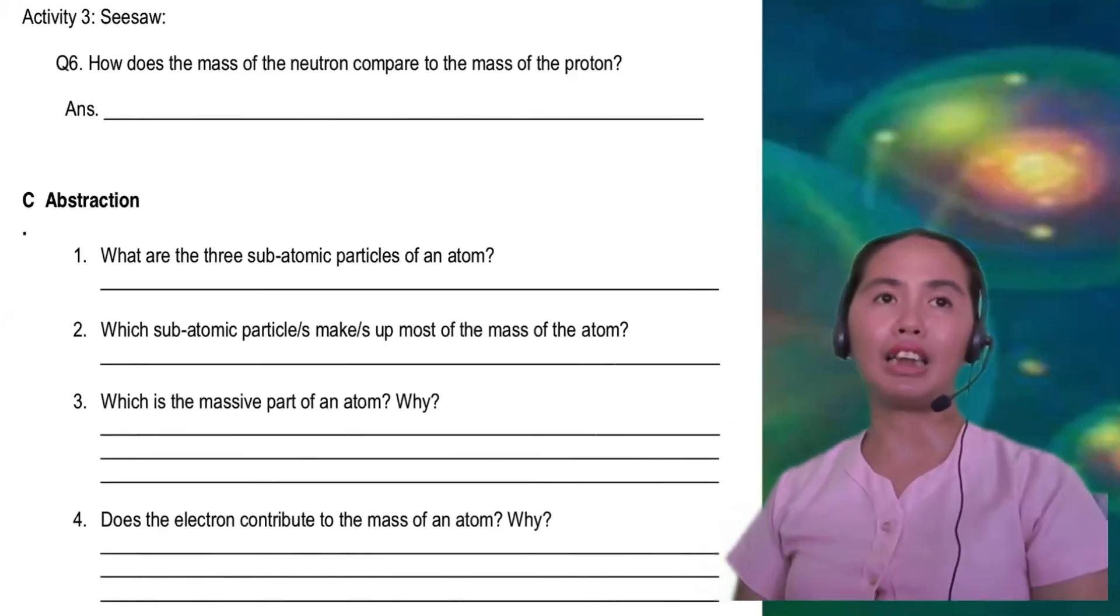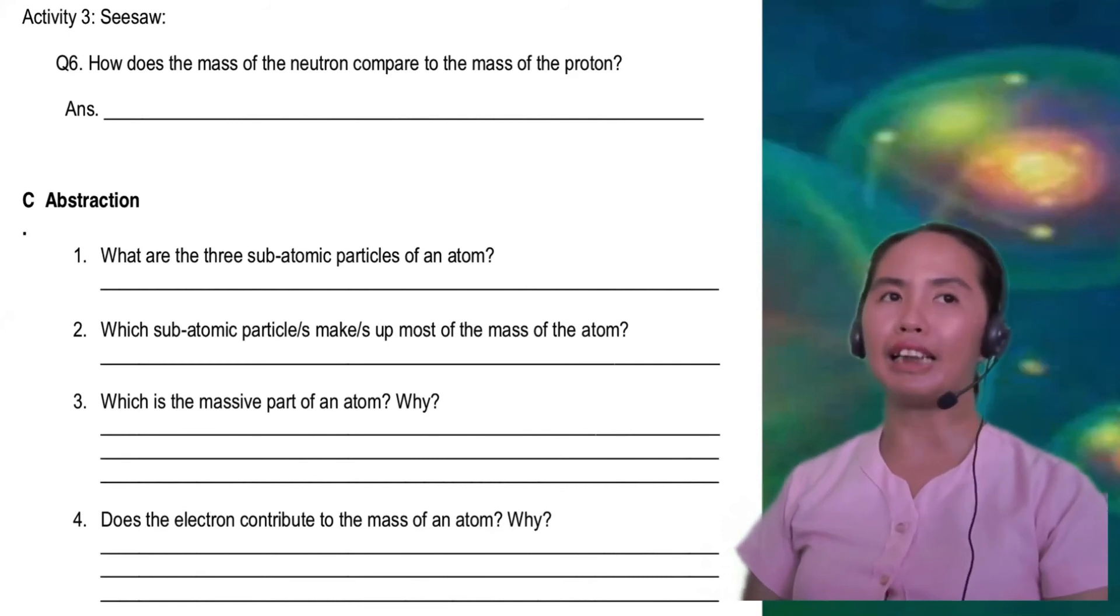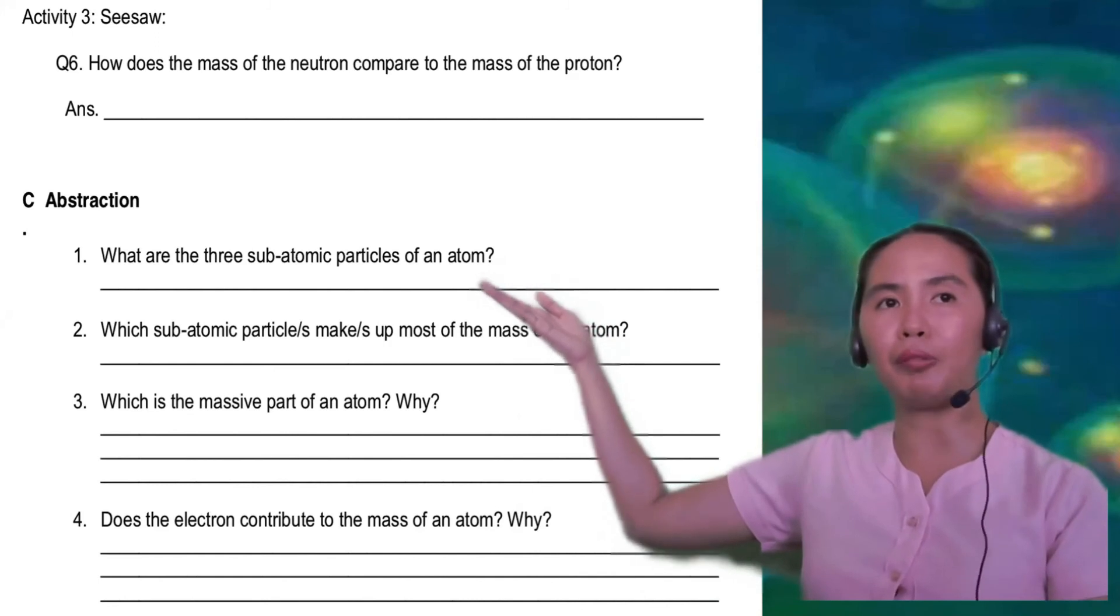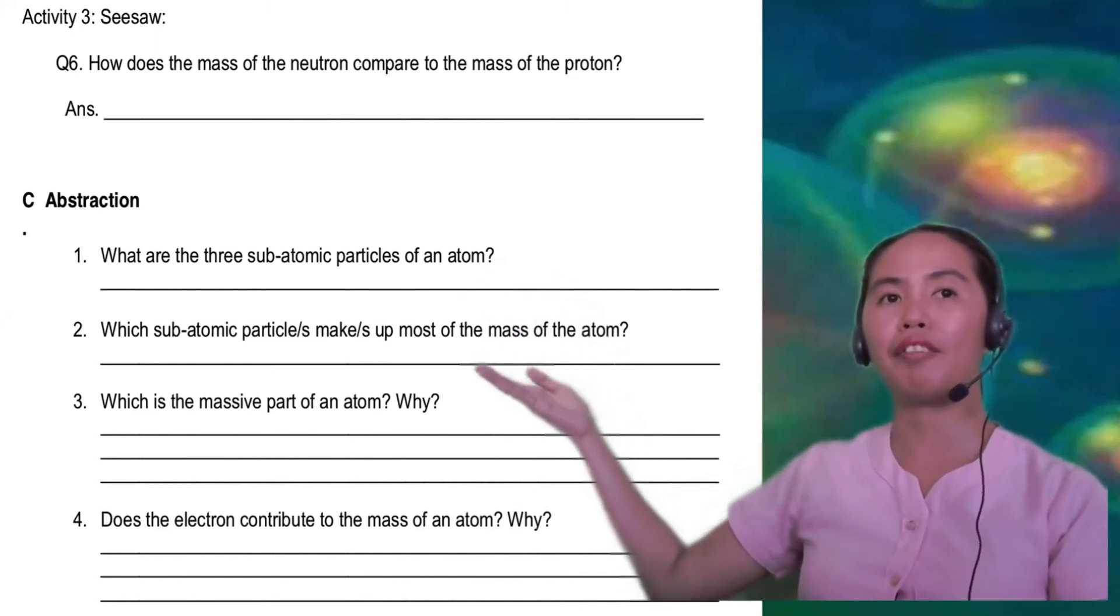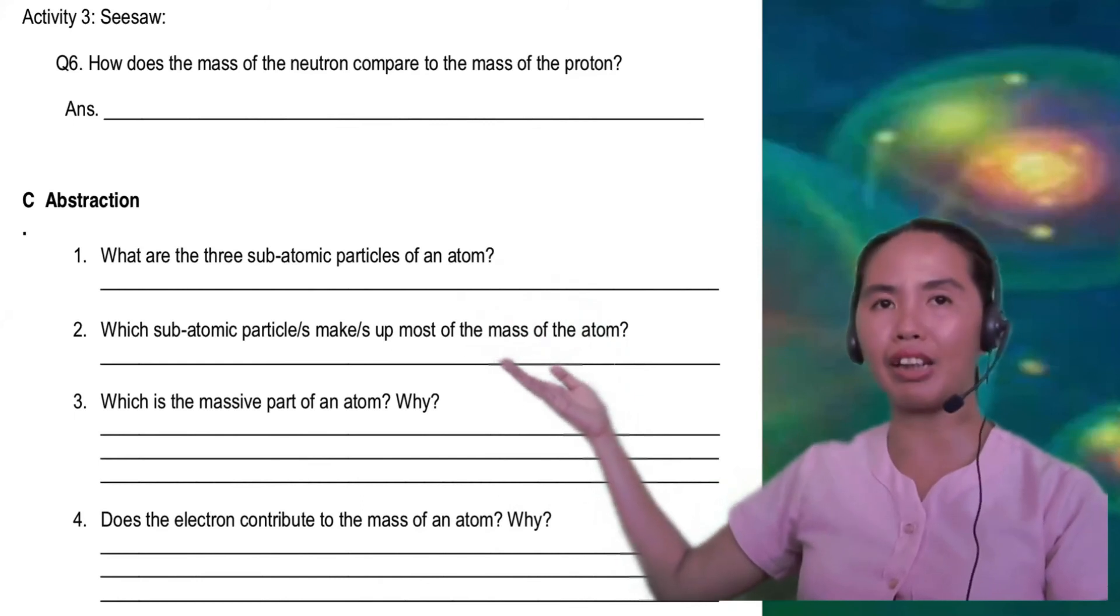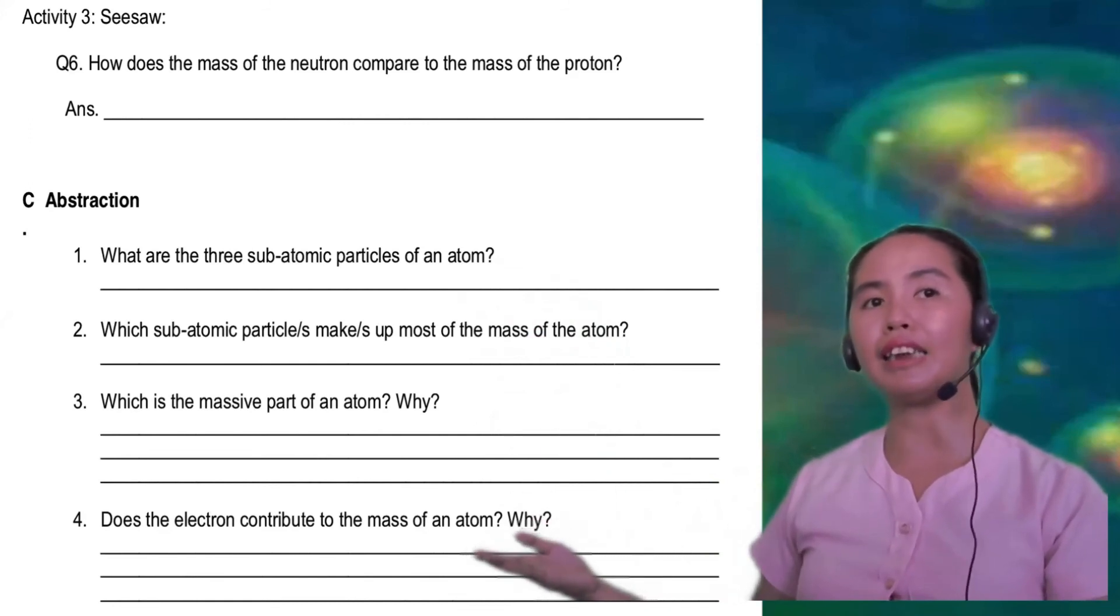For the activity on the seesaw, we have question number 6, how does the mass of the neutron compare to the mass of the proton? For letter C, abstraction, we have number 1, what are the three subatomic particles of an atom? For number 2, which subatomic particle or particles make up most of the mass of the atom? For number 3, which is the massive part of an atom? Why? And lastly, does the electron contribute to the mass of an atom? Why?